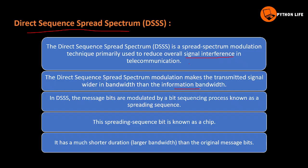DSSS modulation makes the transmitted signal wider in bandwidth than the information bandwidth. The message bits are modulated by a bit sequencing process known as the spreading sequence. This sequence has a much shorter duration and larger bandwidth than the original data, and the transmission bandwidth is larger than the information bandwidth.